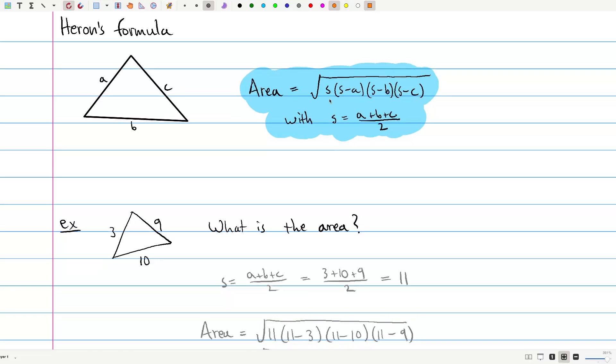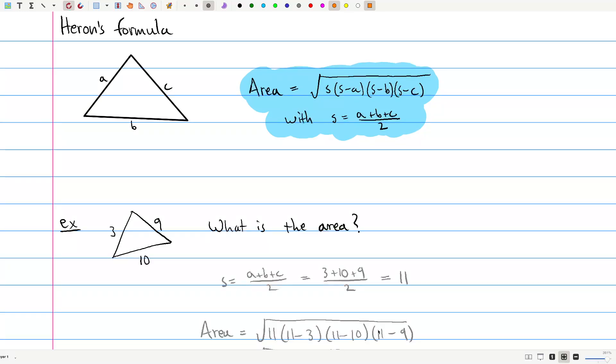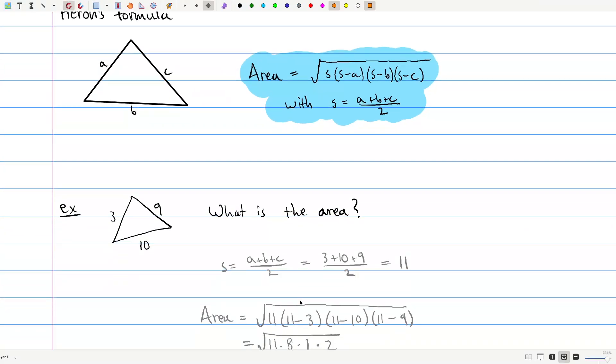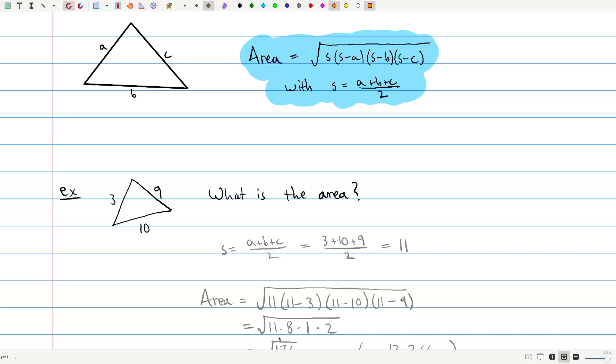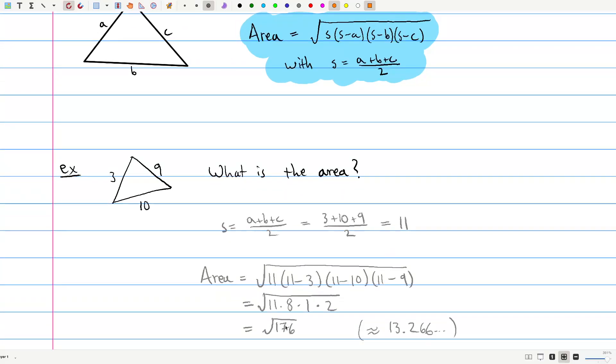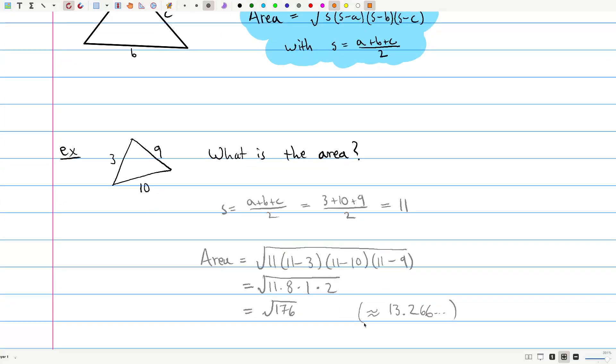And then we go to the main formula, it's the square root of S times S minus A times S minus B times S minus C. So, we calculate, that's 11 times 8 times 1 times 2, and we take the square root, so that's the square root of 176. If we want to know an approximation, then the area is about 13.266. So that's an example.